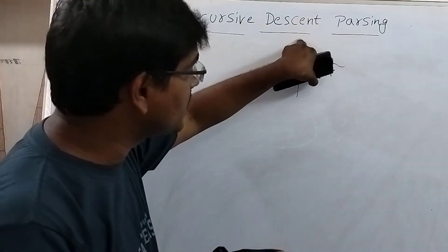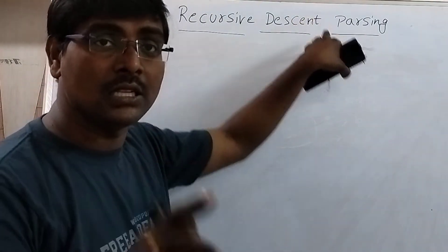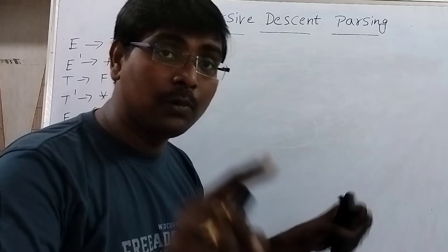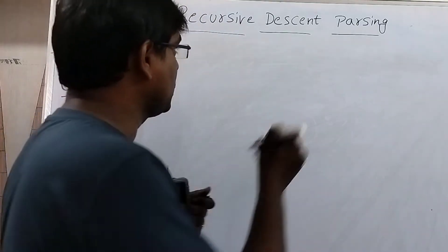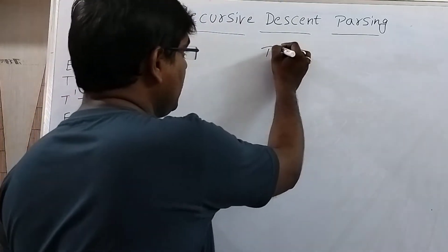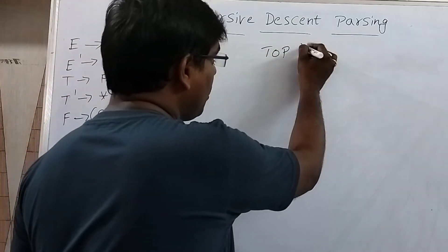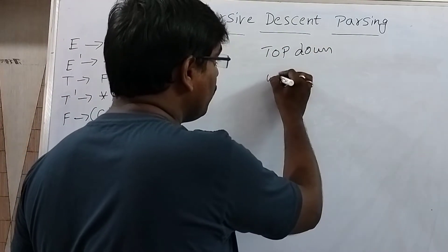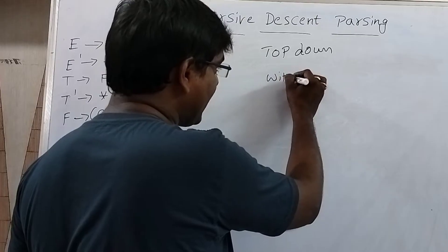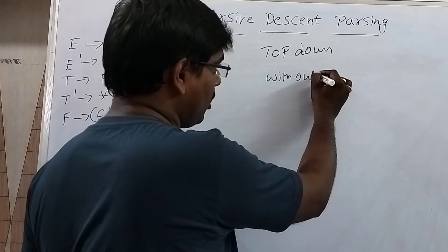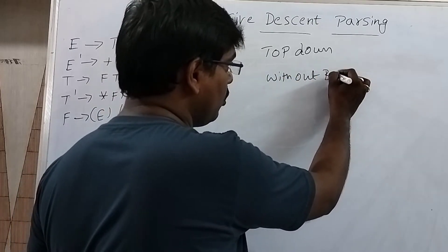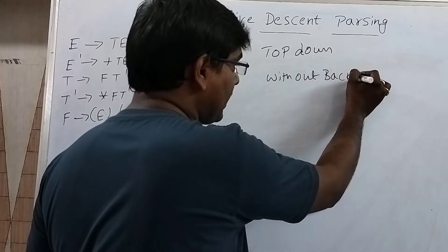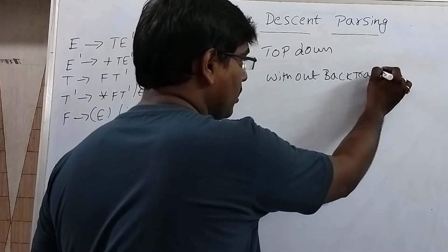So the recursive descent parser is a top-down parser — simply a top-down parser without backtracking.